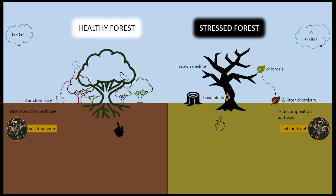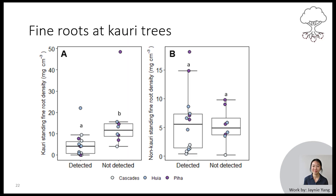Roots are the first point of infection of the kauri pathogen. Jenny found that at kauri trees, the biomass of kauri fine roots was lower where the pathogen was detected, while non-kauri fine roots were not affected. This suggests a decrease in below-ground ecological dominance of kauri as the pathogen starts to take hold.